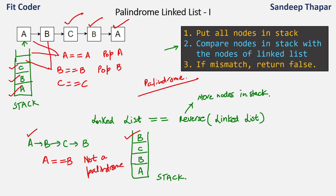The benefit of putting nodes in the stack is that the last node of the linked list is on the top of the stack, so we are effectively storing the reverse. We compare the top of the stack with the first node of the linked list. If they are not equal, the linked list is not a palindrome. If they are equal, we pop the stack and move the pointer to the next node. We continue until the stack is empty — no mismatch means palindrome, any mismatch means not a palindrome.